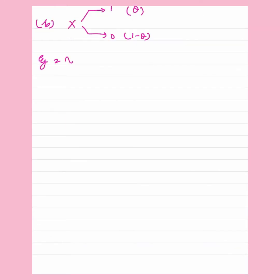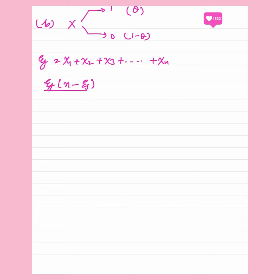Moving on to the next part, we have been given a random variable X that takes value 1 and 0 with probability theta and 1 minus theta respectively. We have been given E equals summation of Xi's. Now we have to show that E times (n minus E) upon n times (n minus 1) is an unbiased estimator of theta times (1 minus theta).